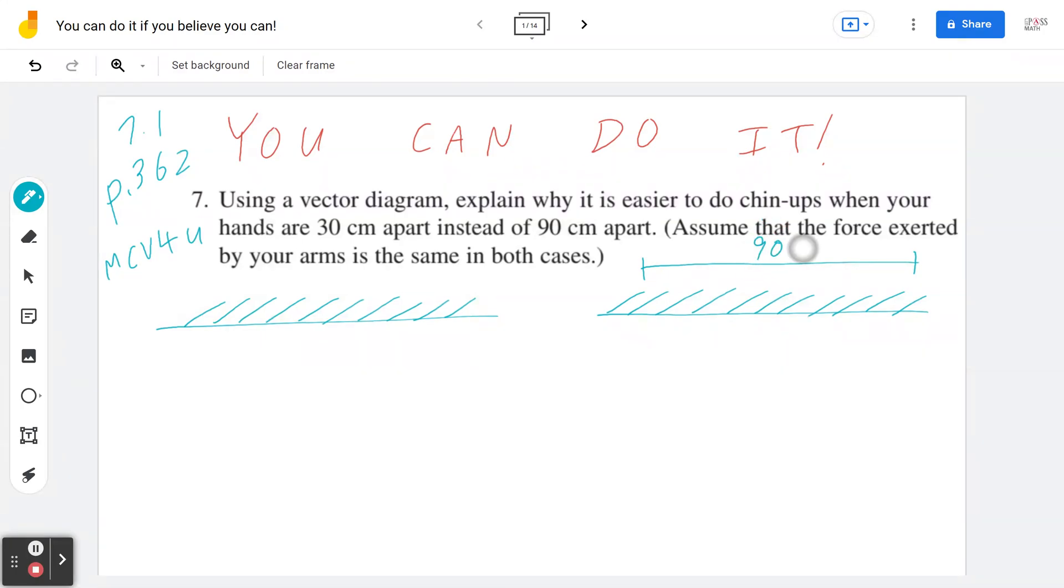So you can divide this into three pieces, and if I kind of just take one of these measurements, I can say this is roughly speaking 30 centimeters. Now what happens is you want to find out the difference in terms of is it easier or is it harder for that chin-up.